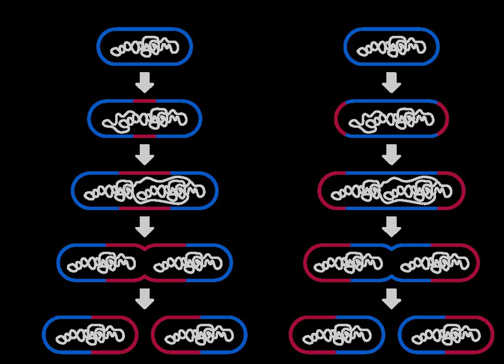Longitudinal - here cytokinesis takes place along the longitudinal axis, e.g., in flagellates like euglena.